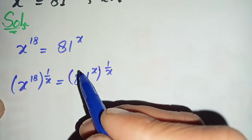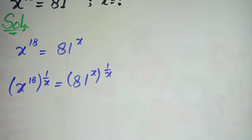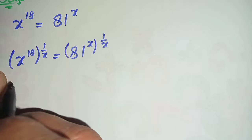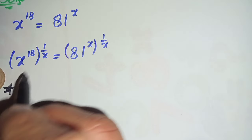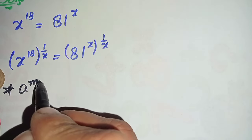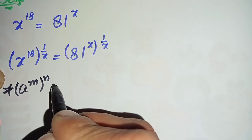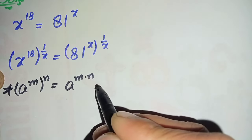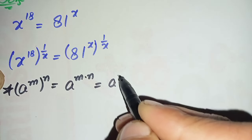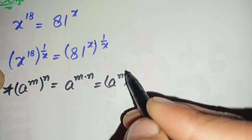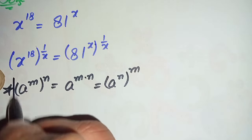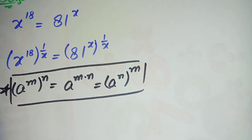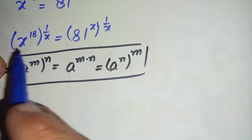Now in this equation we will use an exponential math property to multiply and interchange the powers with each other. The property is: a raised to power m, raised to power n, can also be written as a raised to power m times n.